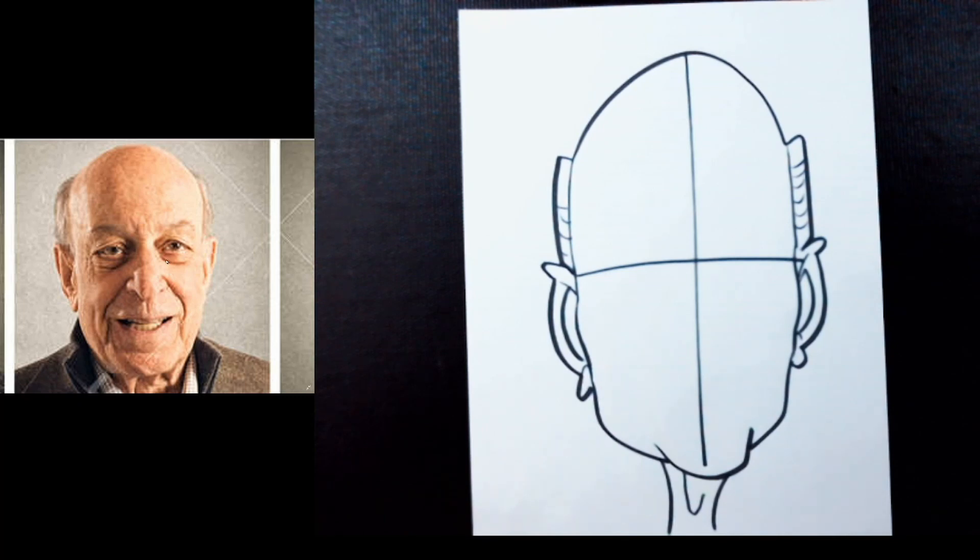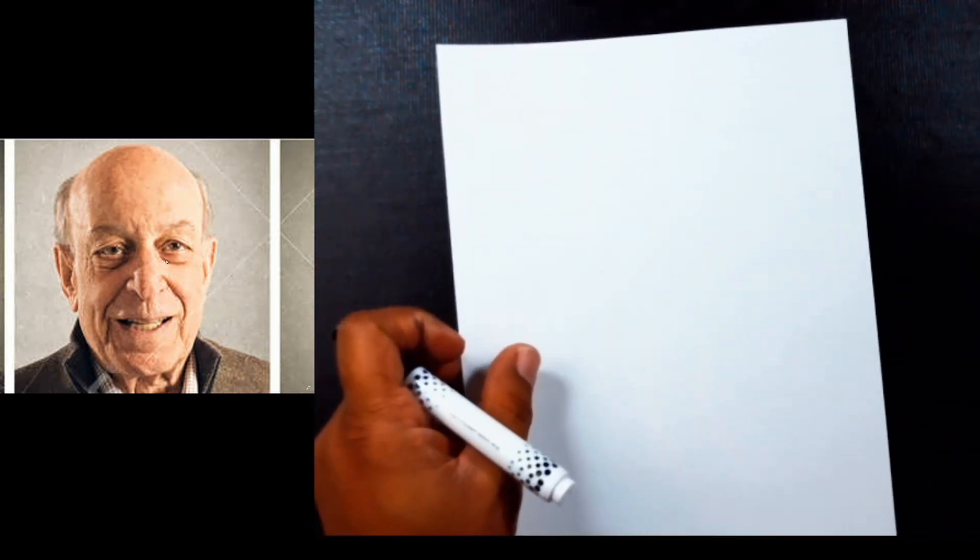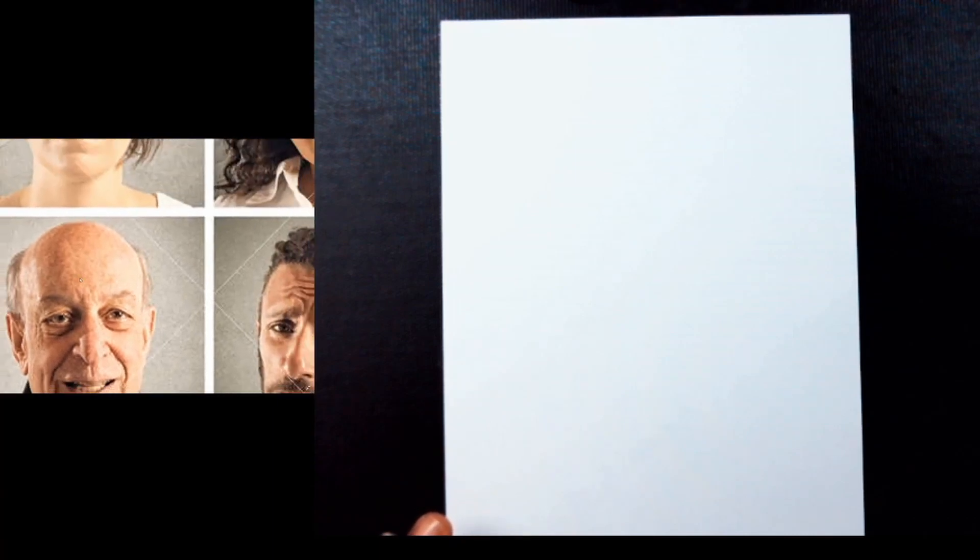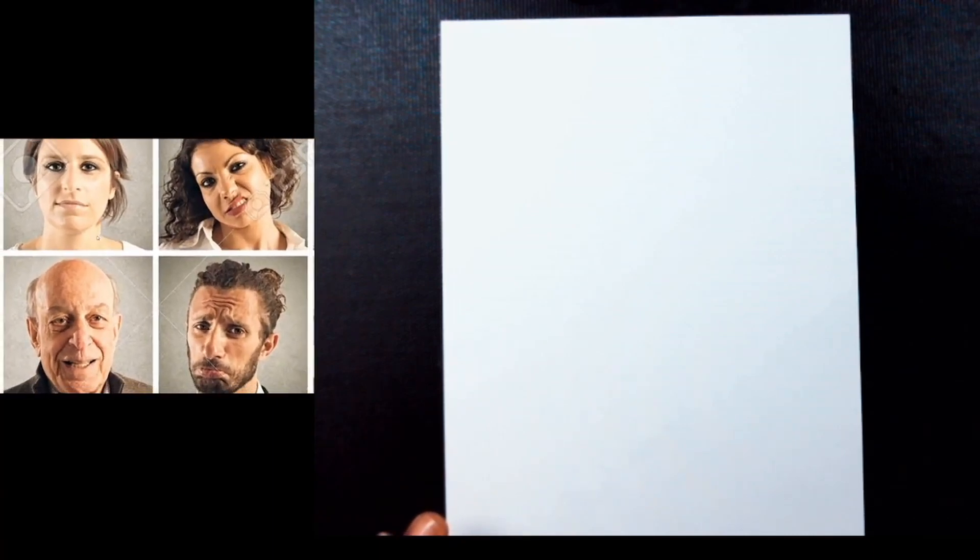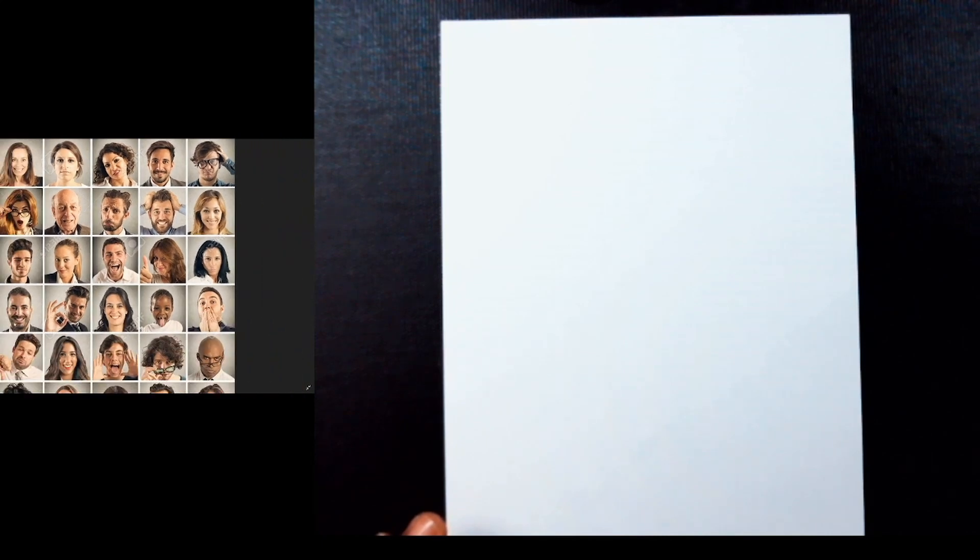Now we're going to do this one more time. We're just going to put another sheet here, and then I'm gonna move over here and we're going to find another head shape, an easy one for us to draw. Let's go with this guy right here, he's pretty straightforward.